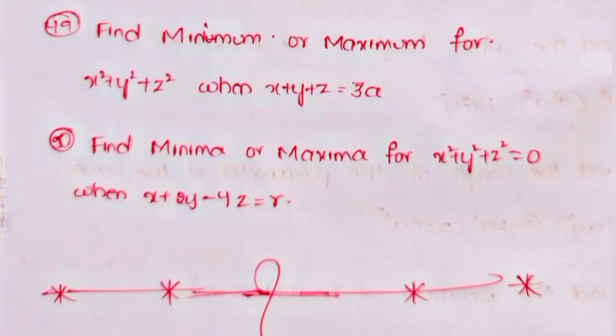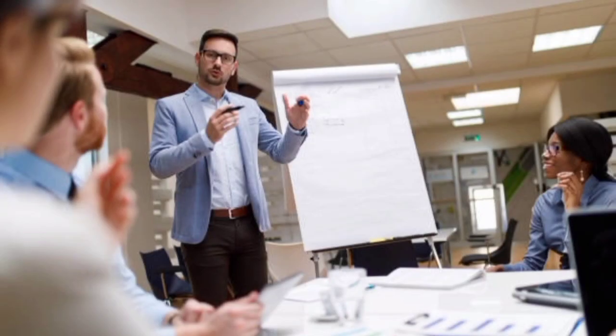Forty-ninth, find the minimum or maximum value of x² + y² + z² when x + y + z = 3a. Fiftieth, find the minimum or maximum of x² + y² + z² when x + 2y − 4z = r. These are the important questions — practice them and ask your faculty any questions you have.